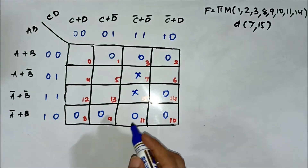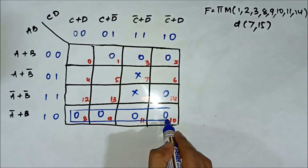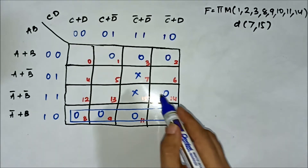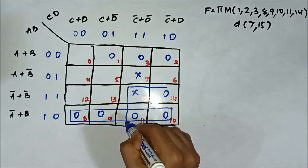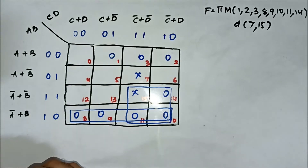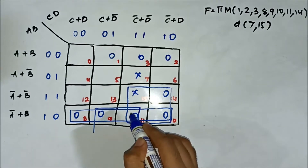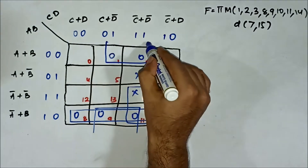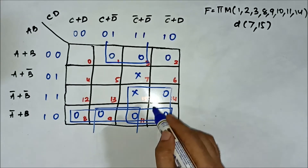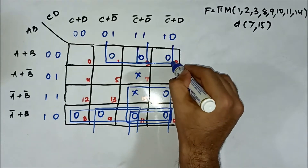Now we have to form the groups. We can form a quad using 4 cells at the bottom: 8, 9, 11, 10. Then we can form a quad involving cells 10, 11, 14, 15. Then another quad involving cells 9, 11 and 1 and 3. And another quad involving cells 10, 11, 2 and 3.